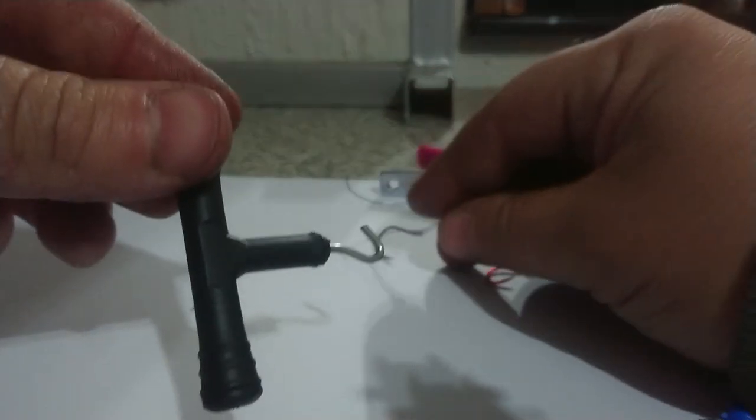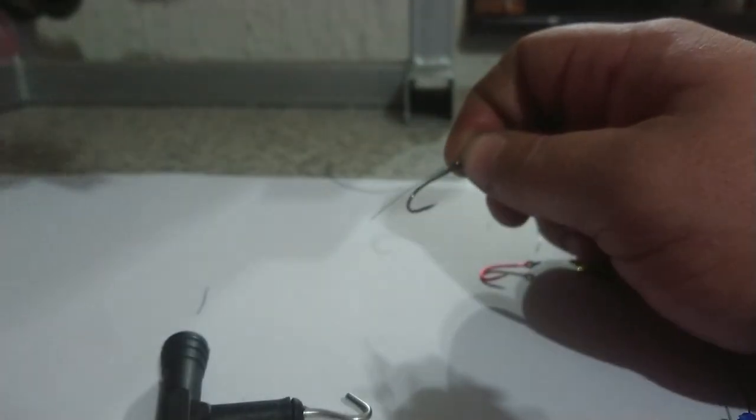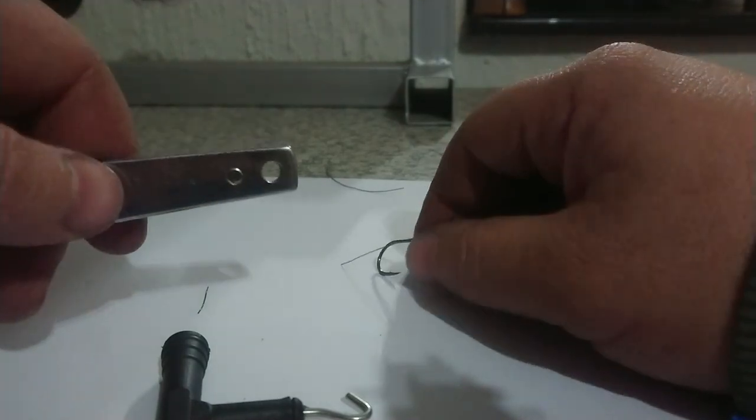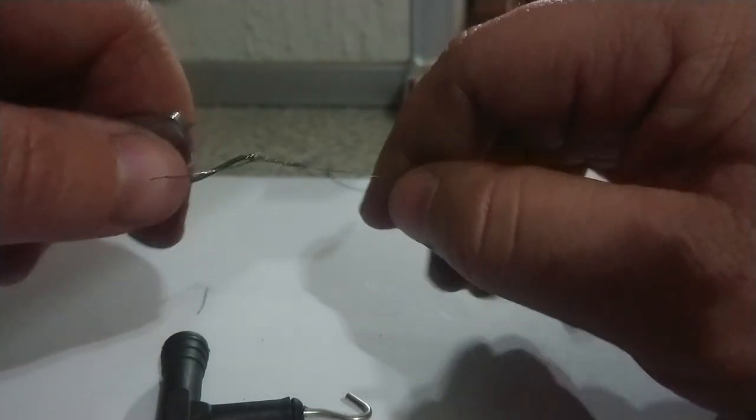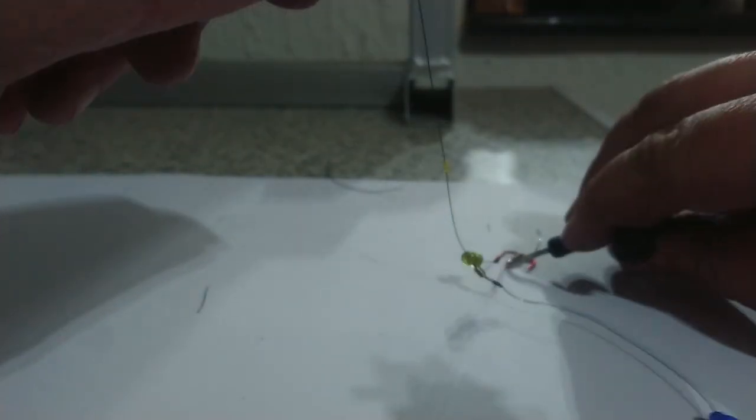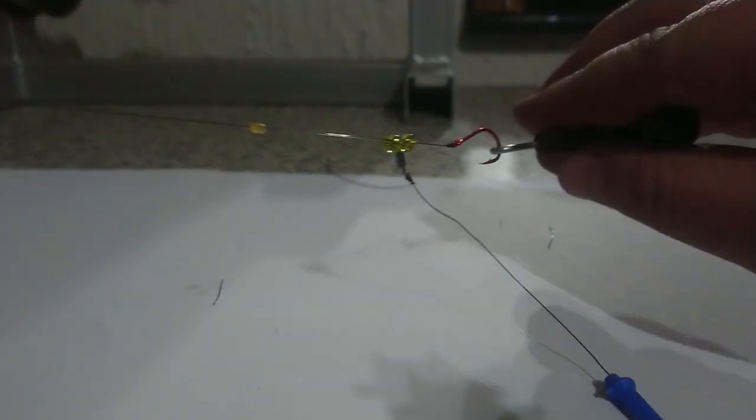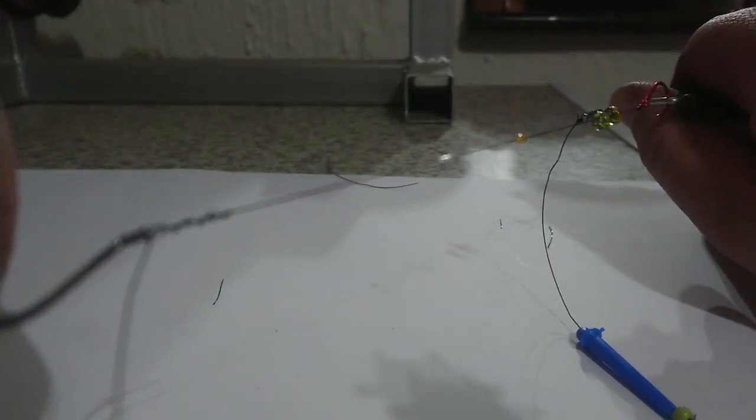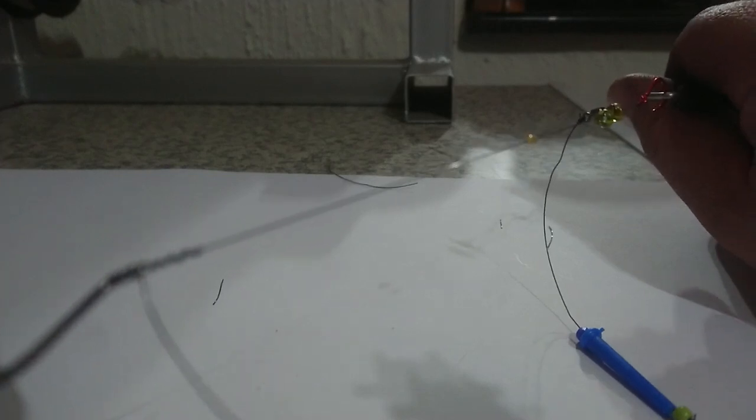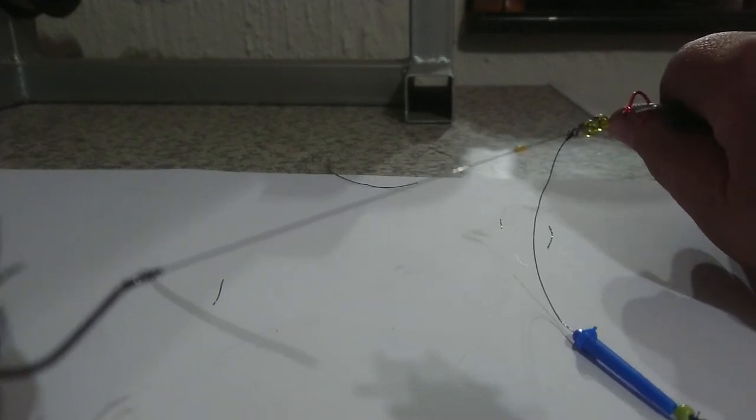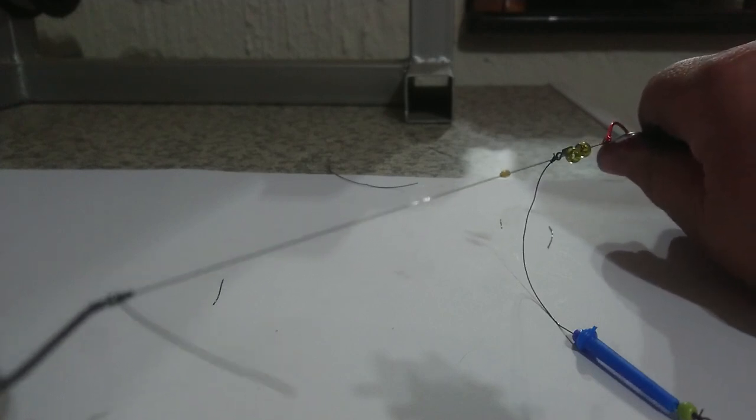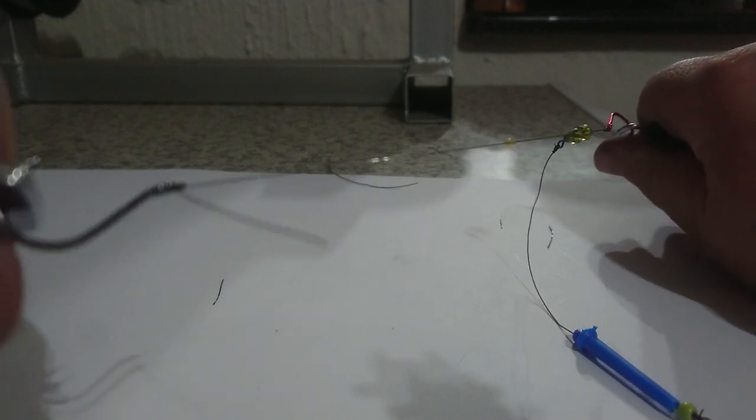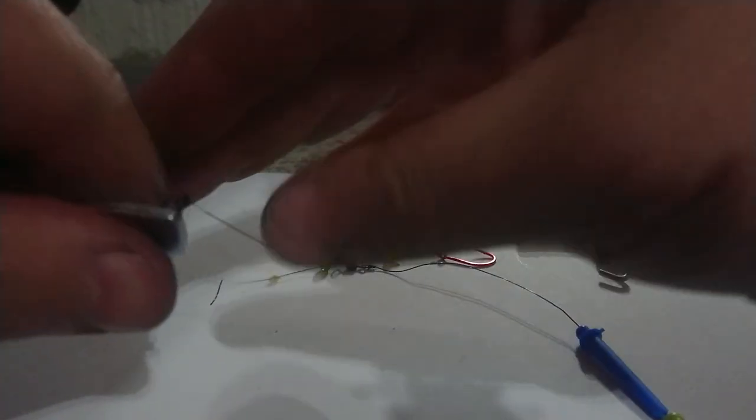Now if you don't have a knot puller, you can even use nail clippers. So what I do, I take the nail clippers just like that, and just for safety reasons, I'm going to just put the knot puller there, and then I'm going to singe it down. And then you can pull on it nicely. See how it stretches. You don't want to stretch it too much that it breaks. So I'm happy with that.